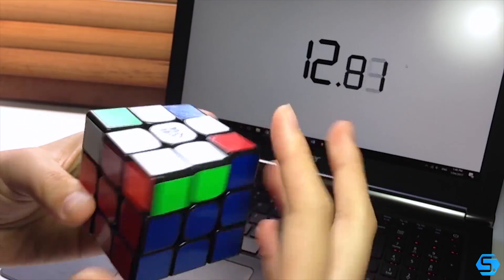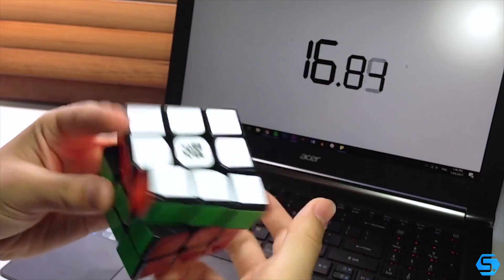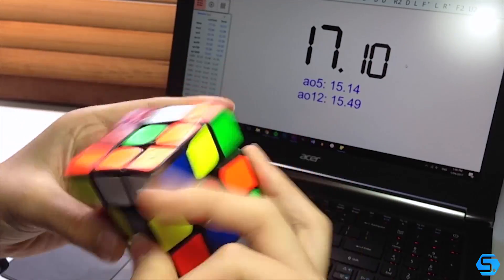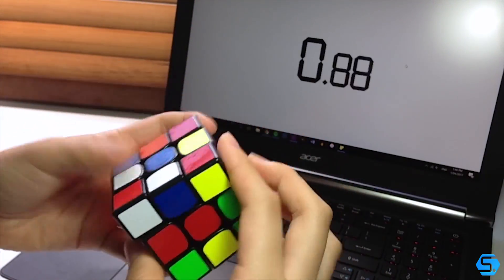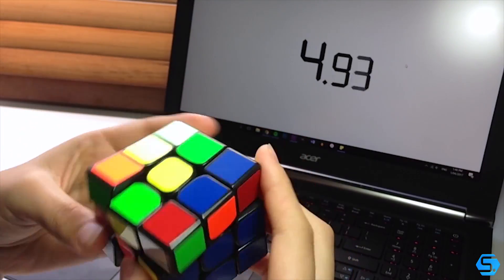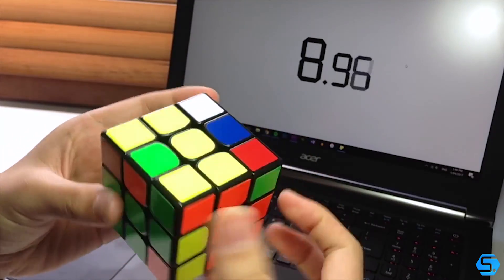So my first speedcube was the YJ Sulong, and then I moved on to a Guanlong and a Yulong, and I've gotten rid of all those puzzles since I started cubing. And it's not a huge deal, but looking back I really wish that I'd kept those, because I guess those have some sentimental value in terms of getting me into the hobby and stuff like that. So yeah, not a huge deal, just a small regret.